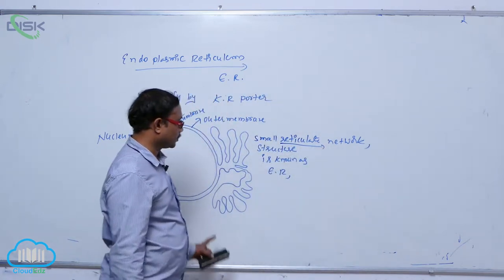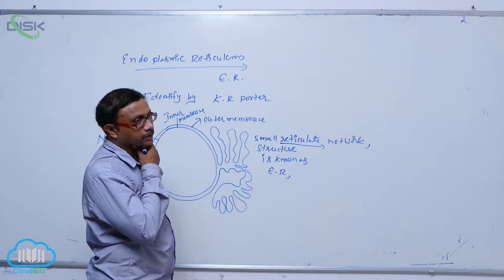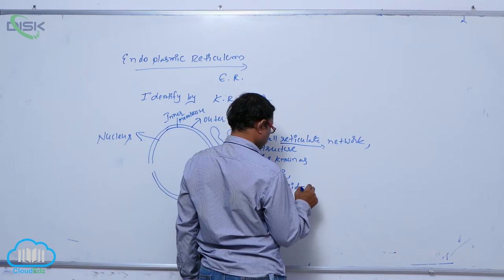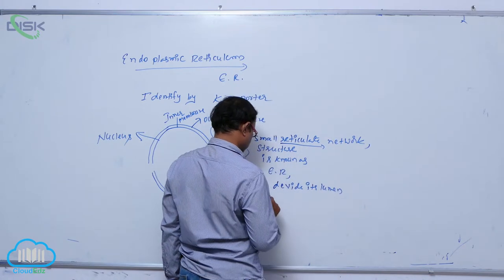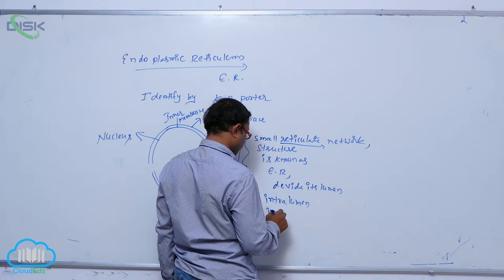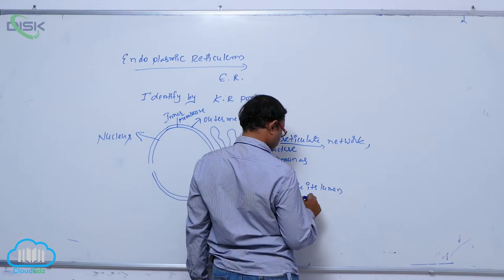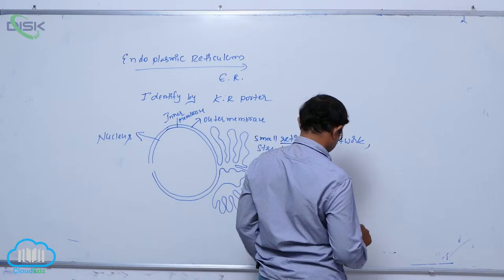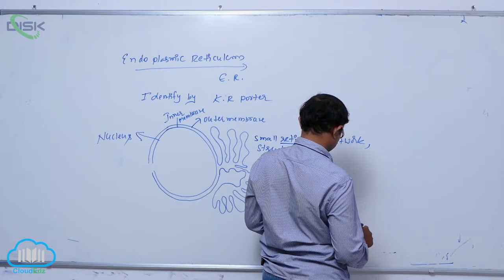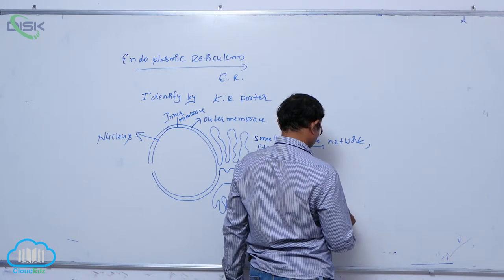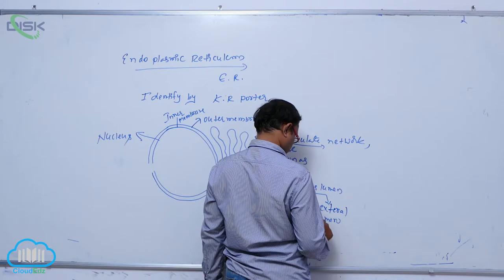This network-like structure is known as the endoplasmic reticulum. It divides the space into intralumen, meaning inside the ER, and extralumen, which is the external lumen — that is, the cytoplasm.